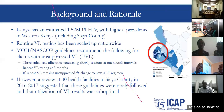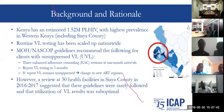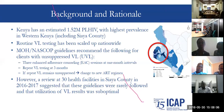Kenya has an estimated 1.5 million people living with HIV, with the highest prevalence in Western Kenya, Siaya included. Routine viral load testing has been scaled up nationwide. The NASCOP guidelines recommend the following for clients with unsuppressed viral load: three enhanced adherence counseling sessions at one-month intervals, repeat viral load testing at three months, and if the repeat viral load remains unsuppressed, change to a new ART regimen. However, a review of 30 facilities in Siaya County in 2016–2017 suggested these guidelines were rarely followed and that utilization of VL results was suboptimal.